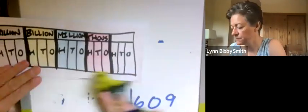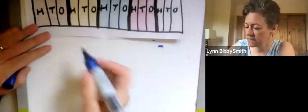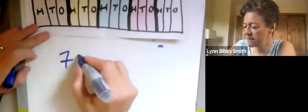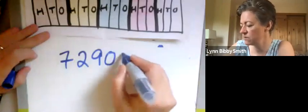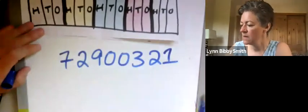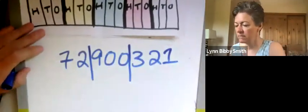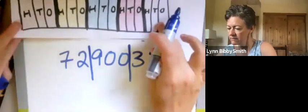Let's try another number. Spacing is important here. I'm going to try 72,900,321. Again, I'm going to put it in my walls and now I'm going to read my number.